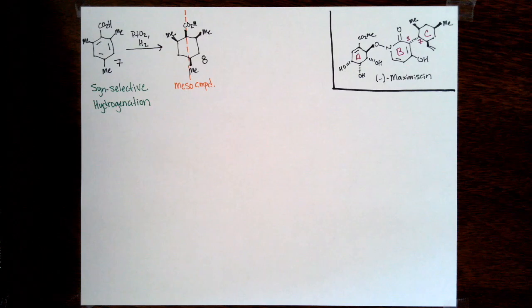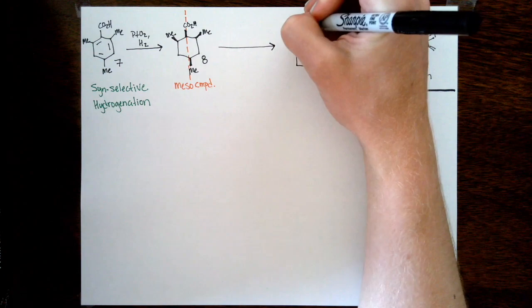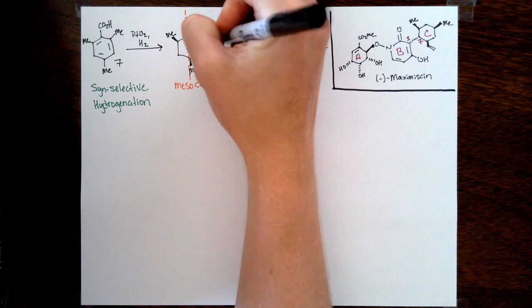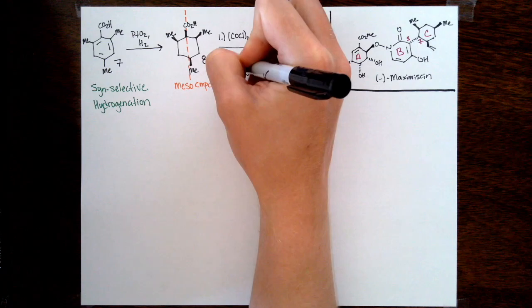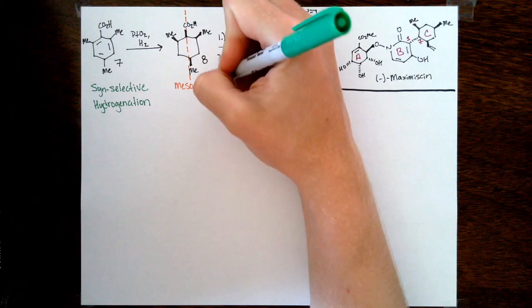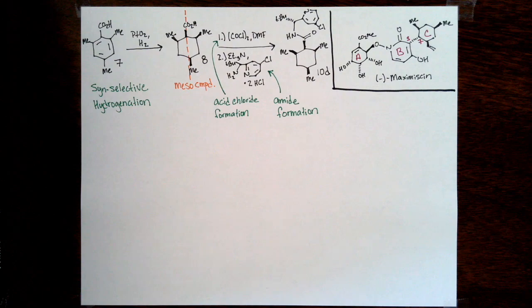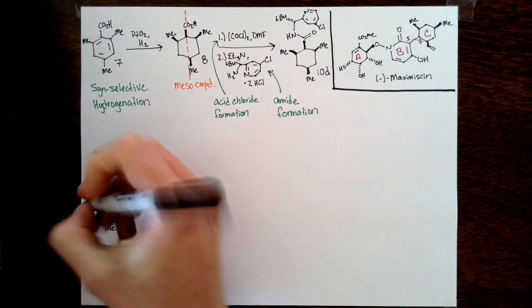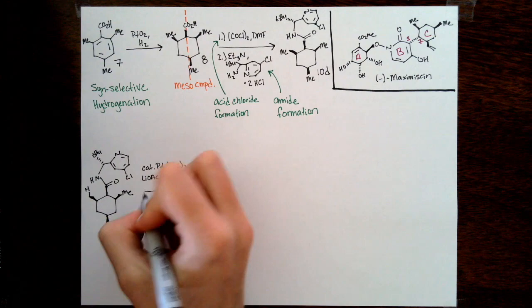Going forward, they then need to desymmetrize this symmetrical cyclohexane ring C. They proposed to do this through a catalytic palladium reaction to install a methanol group off of one of the two methyls syn to that carboxylate group. They initially screened directing groups. Their goal was to form a six-membered palladium cycle during the catalytic step.